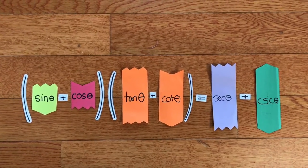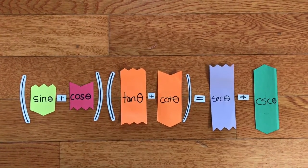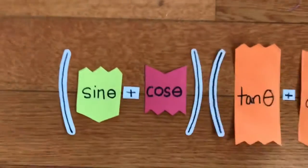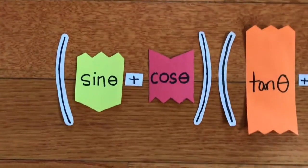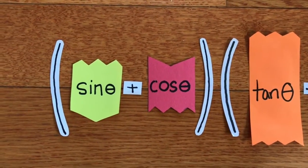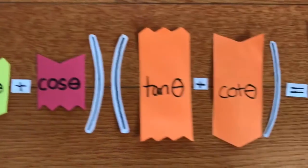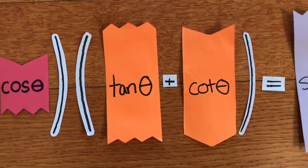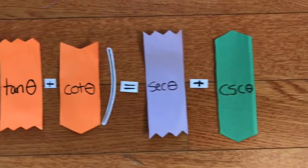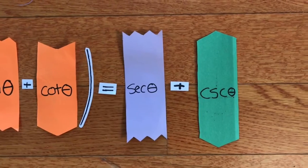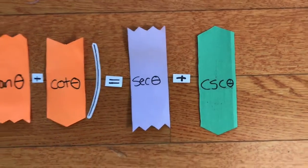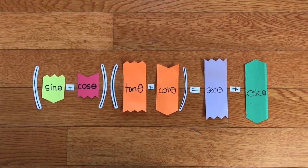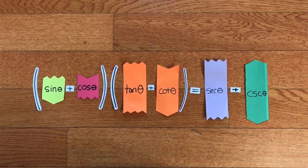Hi, I'm Malay. And I'm Dia. Today we're going to prove the trig equation: (sine theta + cosine theta) times (tangent theta + cotangent theta) equals secant theta plus cosecant theta, which we will do using trig identities, formulas, and basic math knowledge.